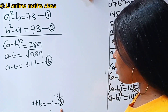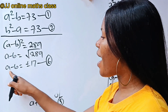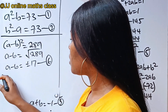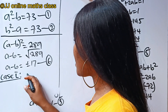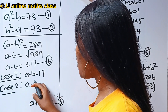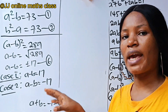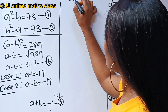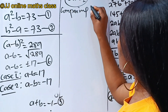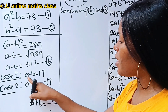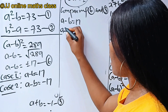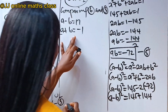Comparing equation 6 and equation 3: equation 3 says a plus b equals minus 1, and we have a minus b equals plus or minus 17, meaning there are two cases. Case 1: a minus b equals 17. Case 2: a minus b equals minus 17. Let's start with case 1, where a minus b equals 17, and equation 3 says a plus b equals minus 1.